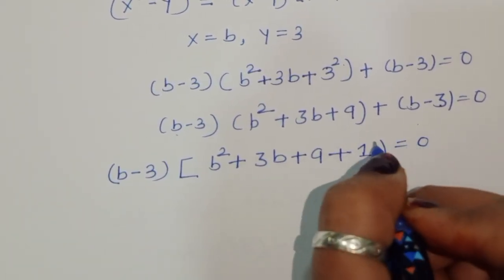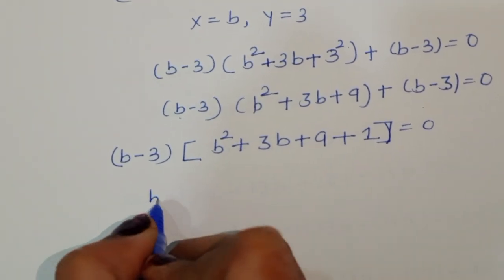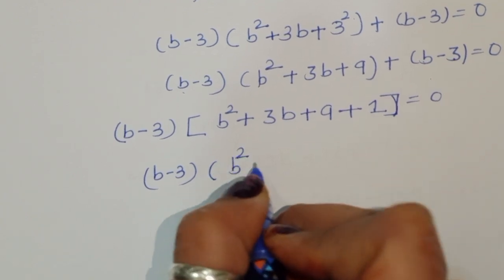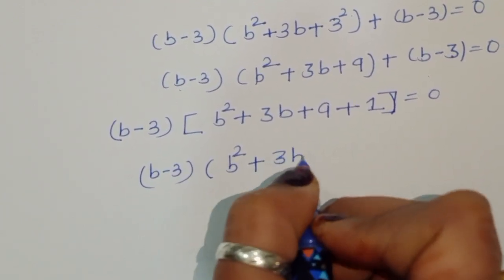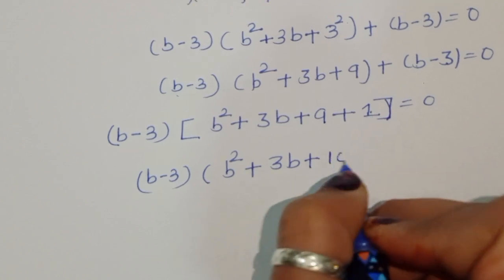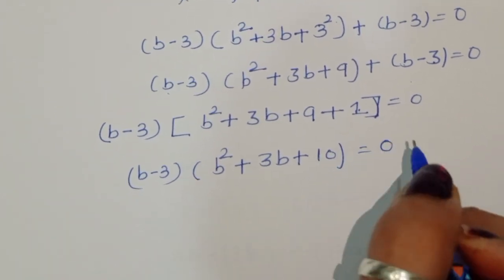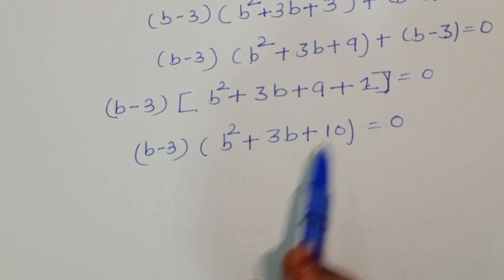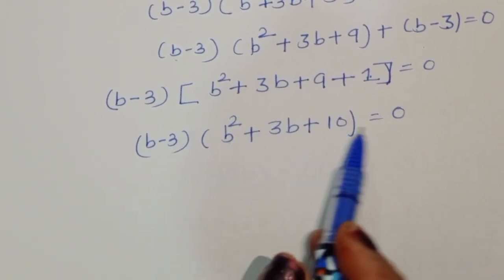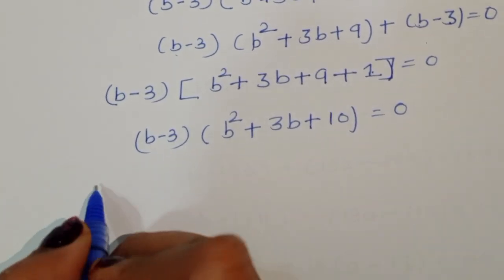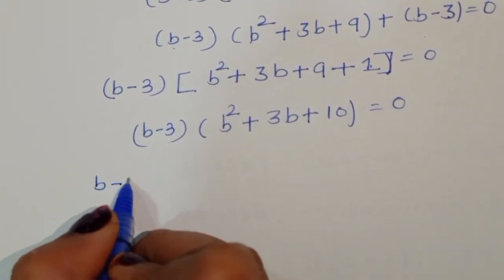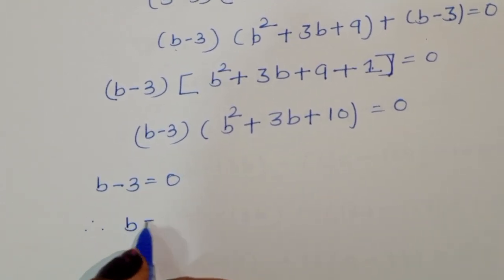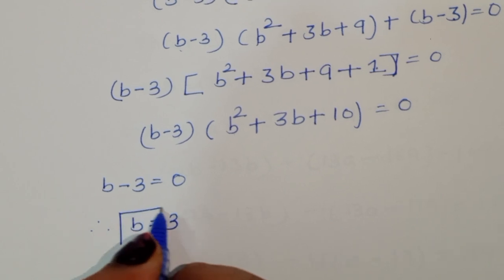Taking (b minus 3) common, the left term becomes b² plus 3b plus 9 plus 1, which equals b² plus 3b plus 10, equal to 0. Now we have two equations: b minus 3 = 0, giving b = 3; and b² + 3b + 10 = 0.